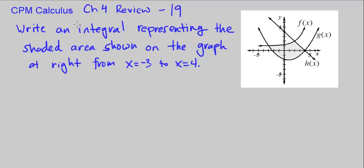This is CPM Calculus Chapter 4 Review, number 19. Here we're asked to write an integral representing the shaded area shown on the graph at right from x equals negative 3 to x equals 4.